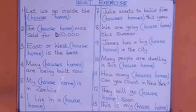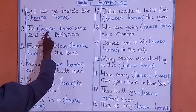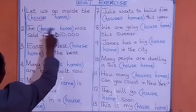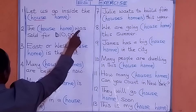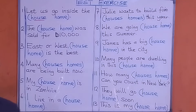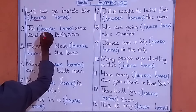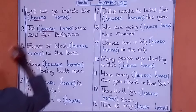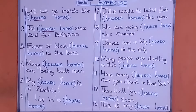Number two: 'The ___ was sold for $10,000.' What are we going to put there? The house was sold for $10,000.